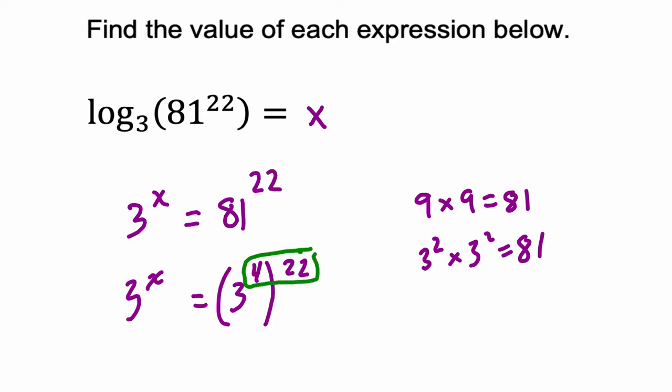That's a law of exponents, right? That's 3 to the 88th power equals 3 to the x. So these two sides are equal when their exponents are 88 on both sides. So that's the answer. The answer is x equals 88.